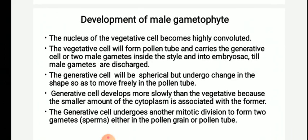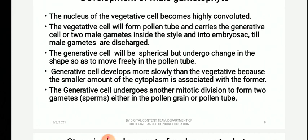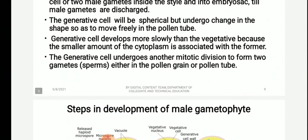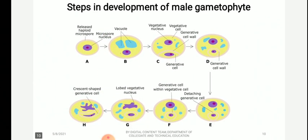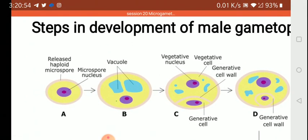The generative cell moves into the center of the vegetative cell; the callose wall later disappears and the generative cell lies freely in the cytoplasm of the vegetative cell. The nucleus of the vegetative cell becomes highly convoluted. The vegetative cell forms the pollen tube and carries the generative cell or two male gametes inside the style and into the embryo sac. Till the male gametes are discharged, the generative cell remains spherical but undergoes a change in shape so as to move freely in the pollen tube.